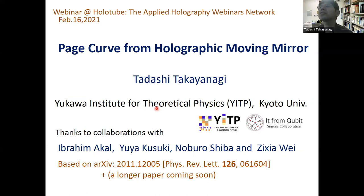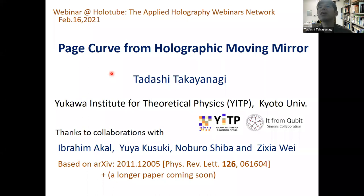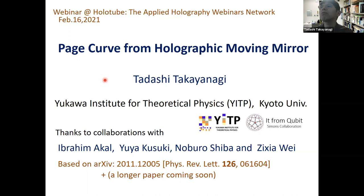Thank you to the organizers for this HoloTube and for the kind invitation. I'd like to talk about the page curve from a holographic moving mirror. This is basically a quite basic program — an application of conformal field theory to the physics of gravitational physics, including the black hole information paradox. This HoloTube is also aimed at applied holography like ADS/QCD or ADS/CMT, and the technique I'm discussing — especially what we call ADS/BCFT — has potential applications to condensed matter physics.